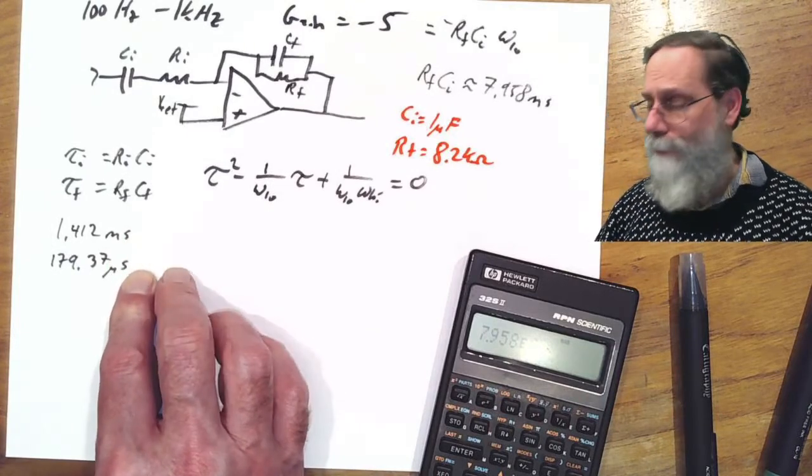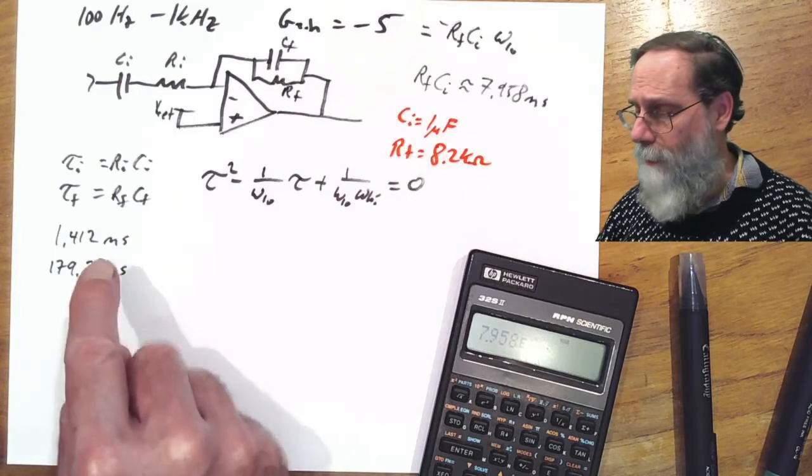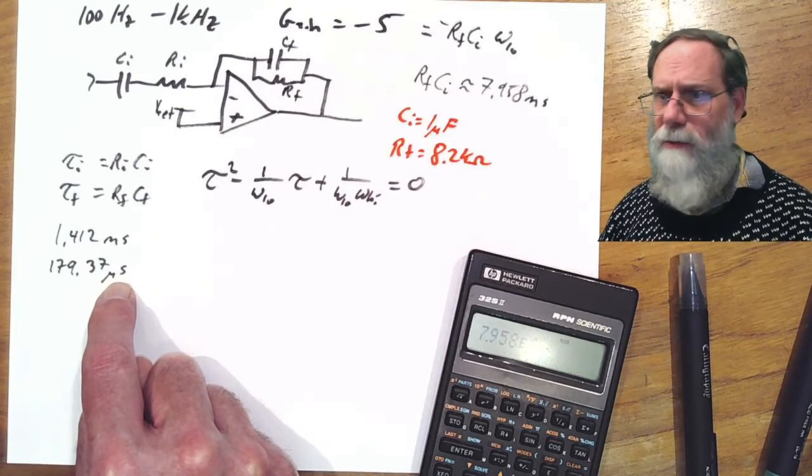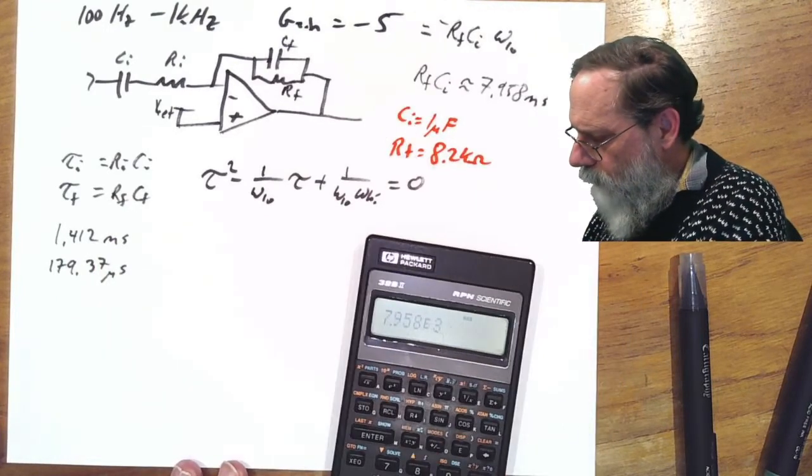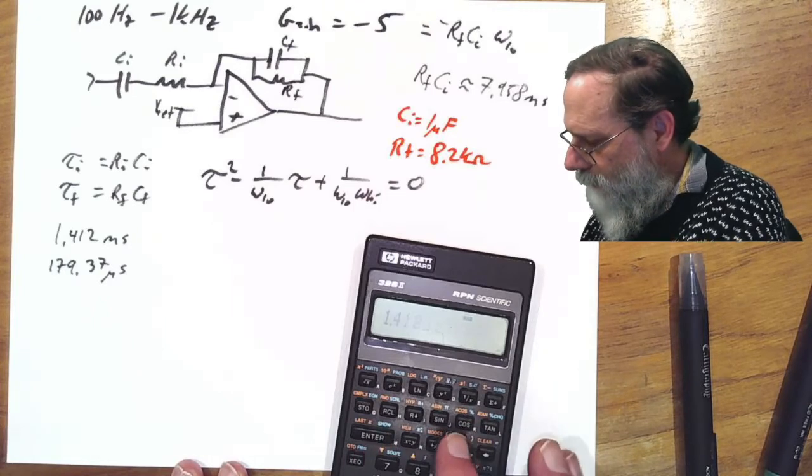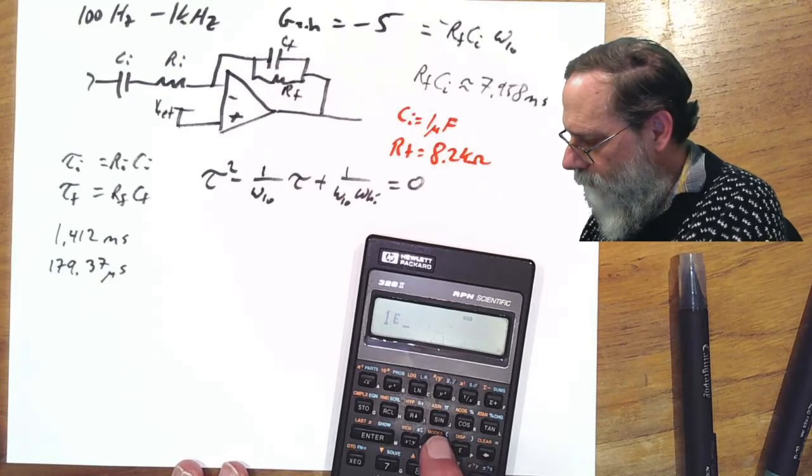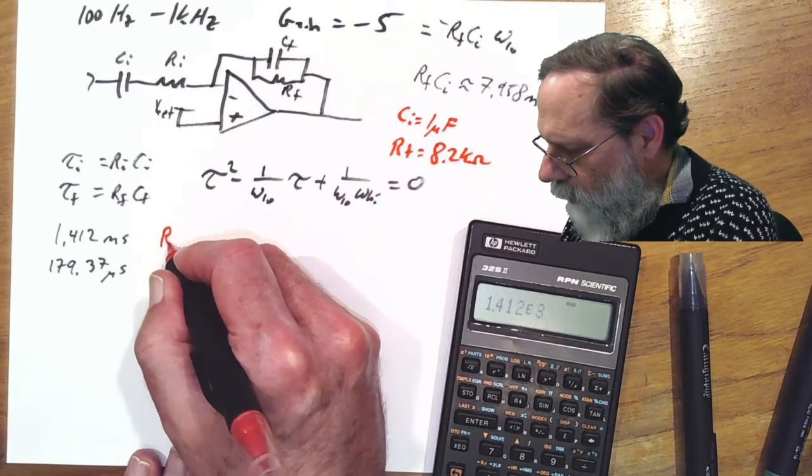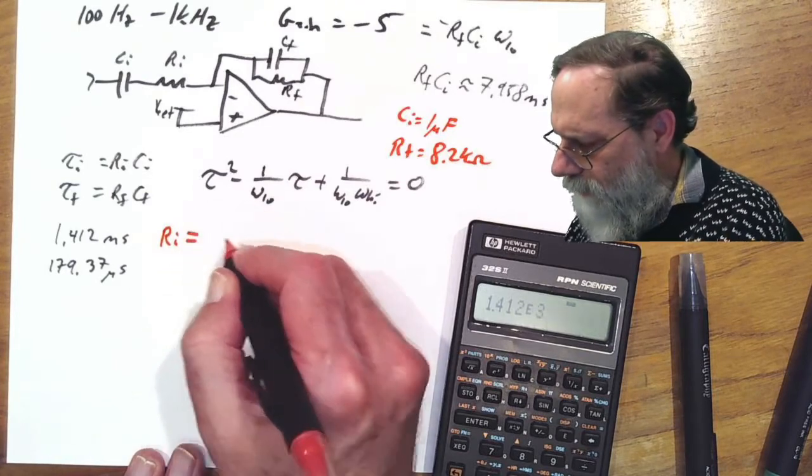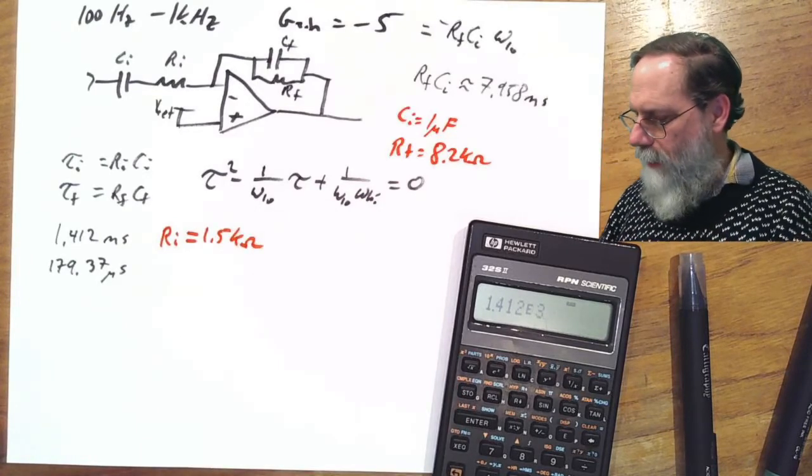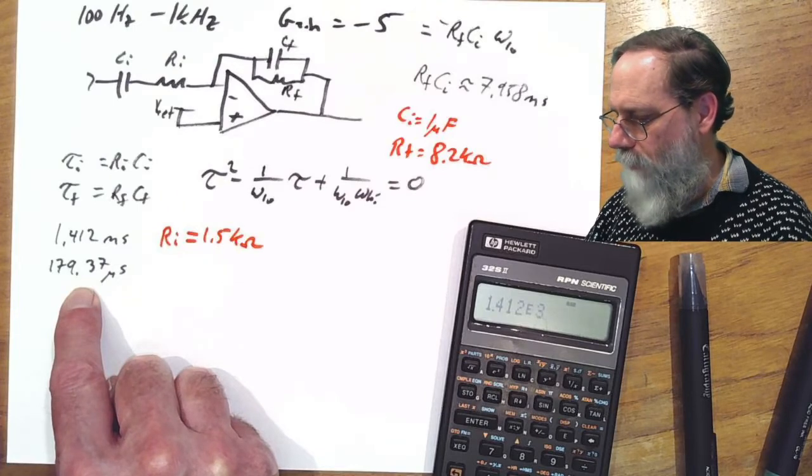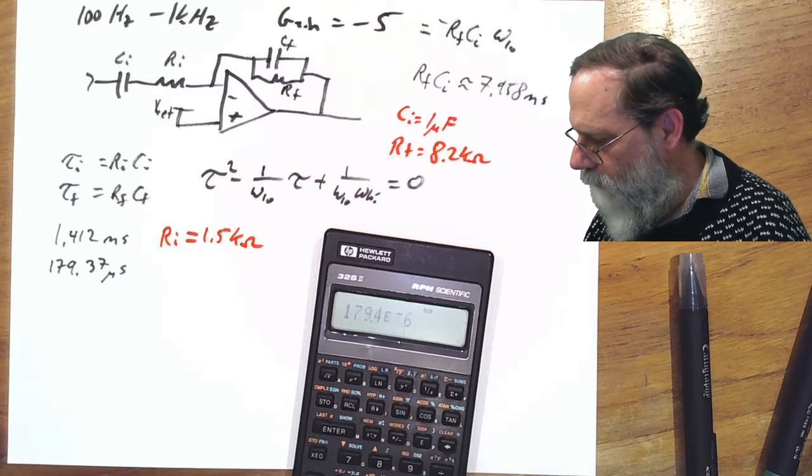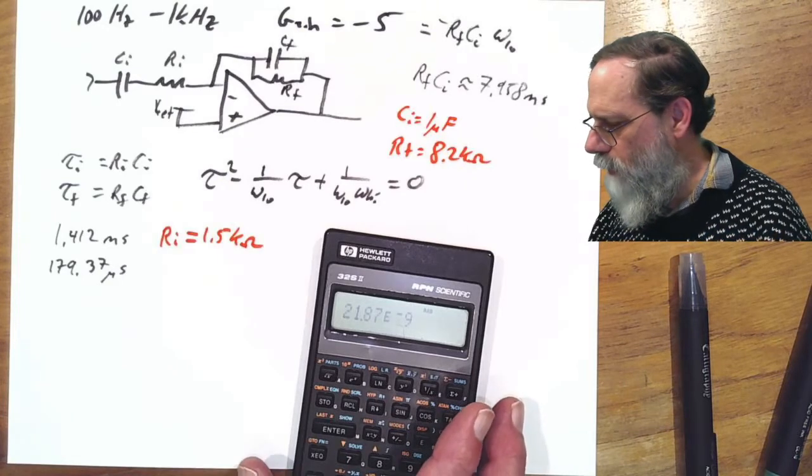Now we've got to figure out which of these two time constants is which. I made ci be pretty big in order to get the rfci being a big time constant. So I probably want to make it be with a big time constant here also. Because if I put it with a small time constant, I need a really, really tiny ri. So if I do 1.412 milliseconds and divide that by the microfarad, I get 1.412 for ri. Let's round that to 1.5 kilohms. And that leaves us with this time constant for rfcf. So we take 179.37 microseconds and divide by 8.2 kilohms. And I get 22 nanofarads.